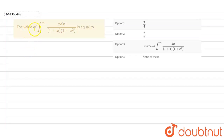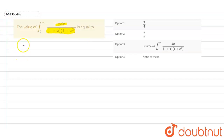Hello guys, so the question given to us here is we have to find the value of this integral: from 0 to infinity of x dx upon (1 plus x) multiplied by (1 plus x squared). These are the options, so let's start. Let's suppose this integral is equal to I.